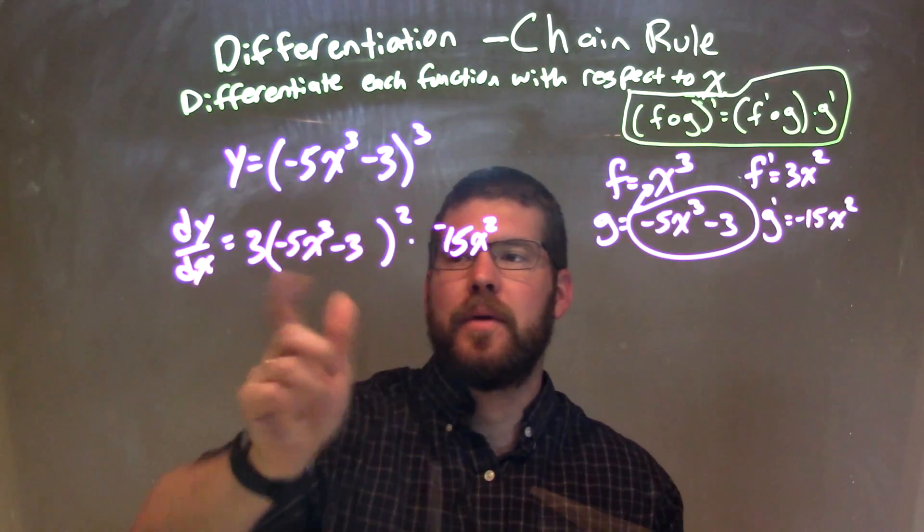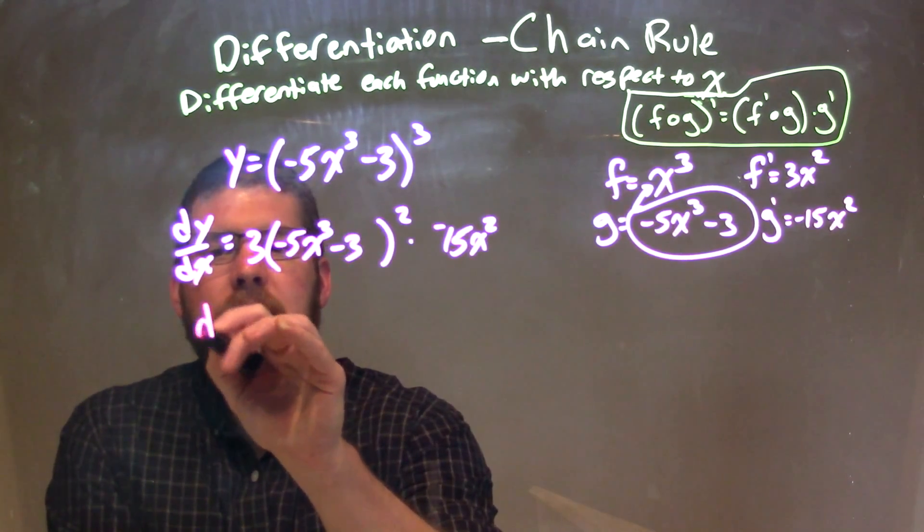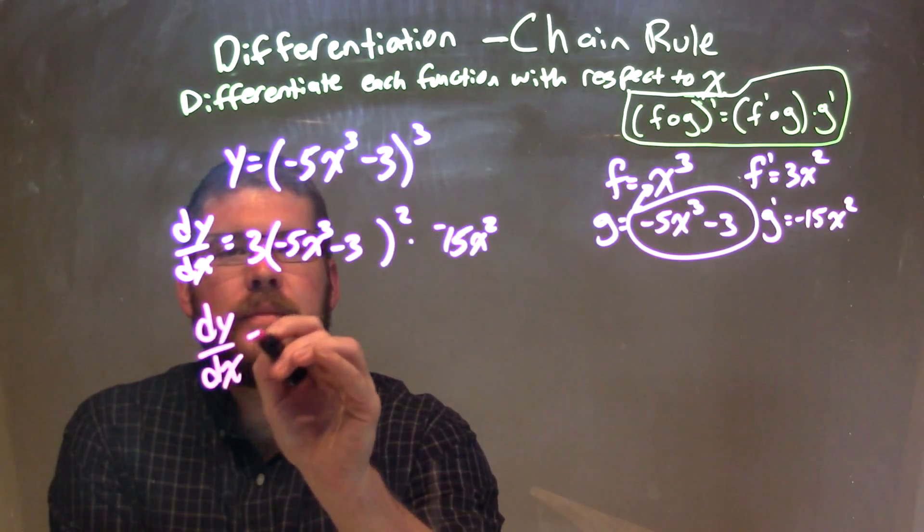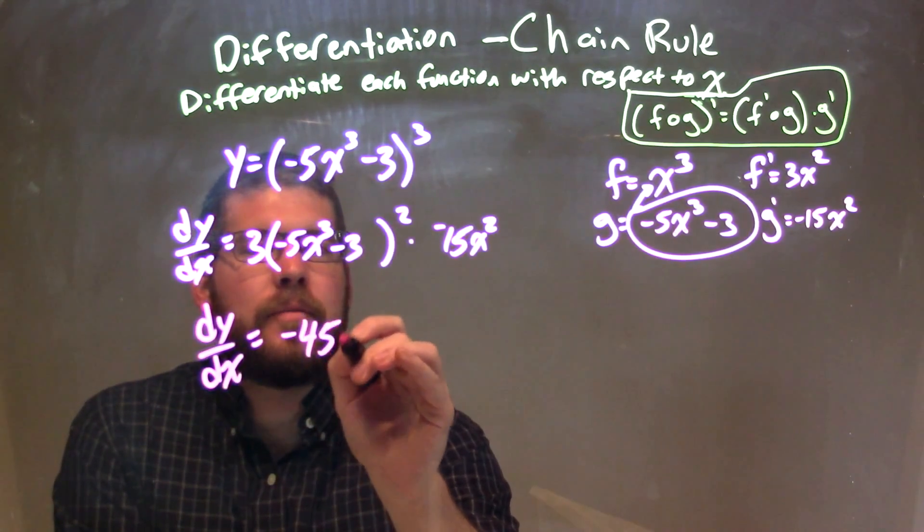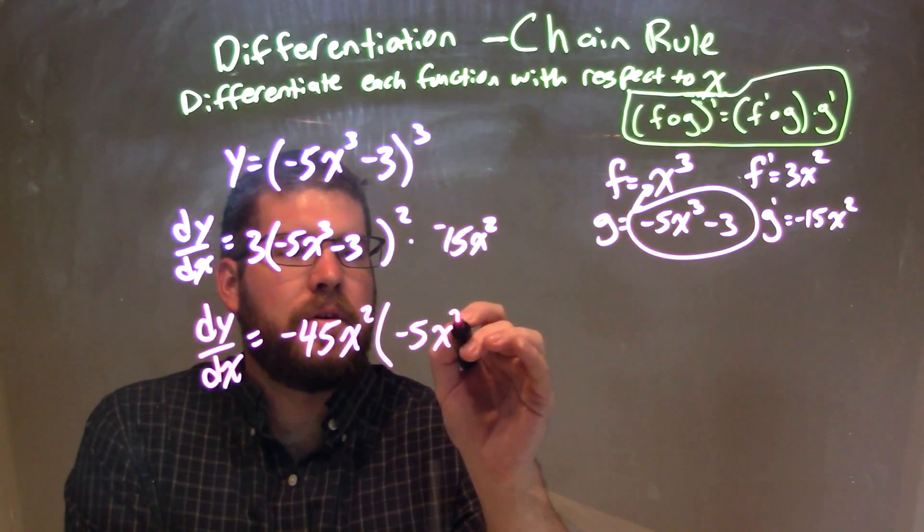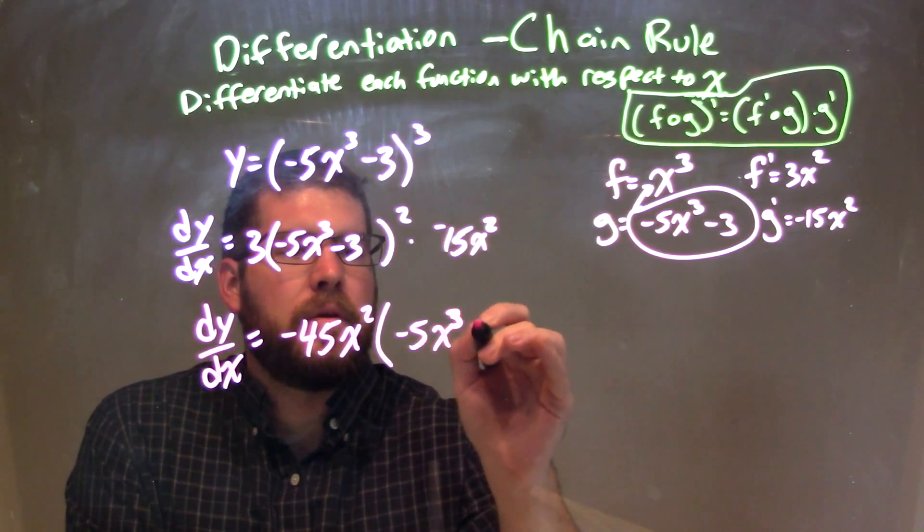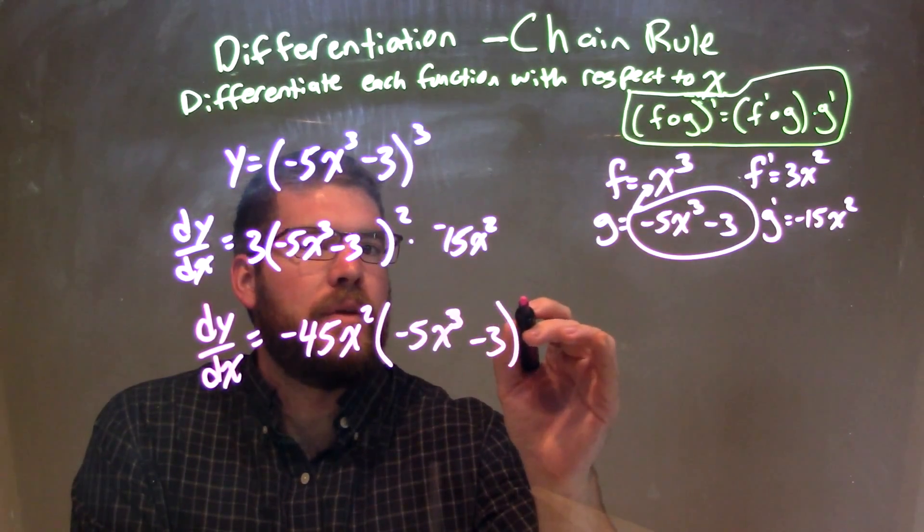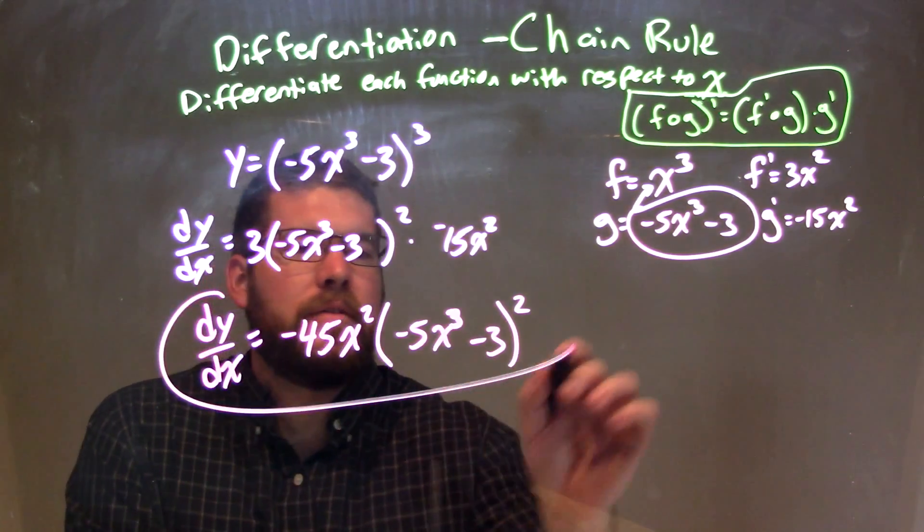Let's multiply the negative 15x squared by 3, and we have our answer here. dy/dx is negative 45x squared times (negative 5x to the third minus 3) all to the second power.